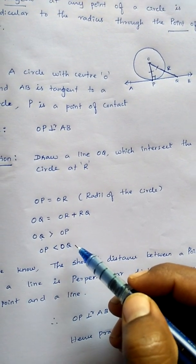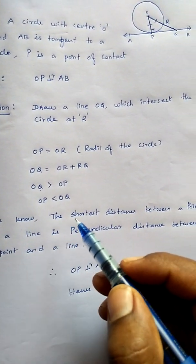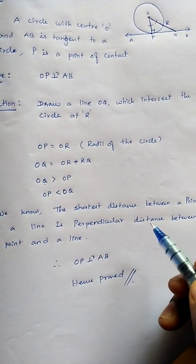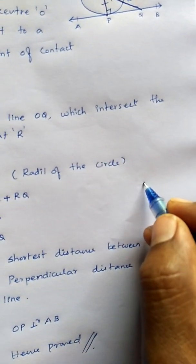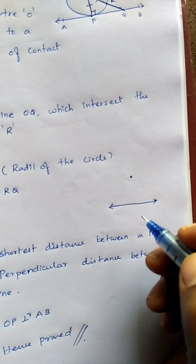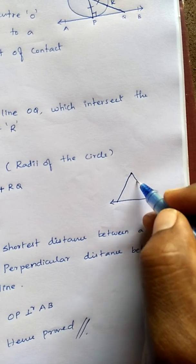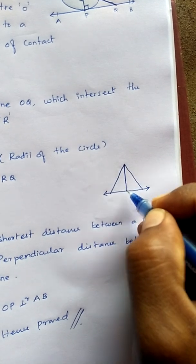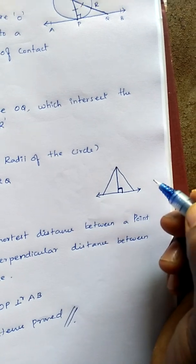We know the shortest distance between a point to a line is perpendicular distance between the point and a line. For example, when you take one point and one straight line, for the point and the line what is the shortest distance? When you draw this, is this the shortest distance? No. When you draw straight exactly, this will be the shortest distance.